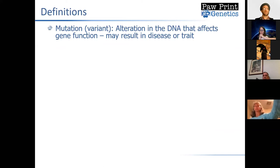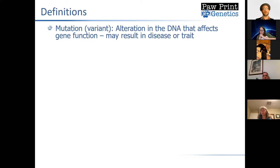First, a few definitions. A lot of people are familiar with the word mutation — it's essentially just an alteration in the DNA that affects gene function. It's more commonly referred to as a variant or genetic variant nowadays. This change can potentially result in a disease or trait, but it doesn't always have to. Sometimes it doesn't change anything at all in the dog; in other cases, it may be completely incompatible with life.